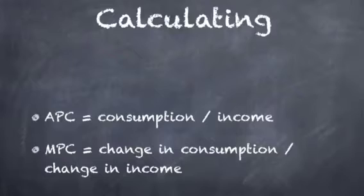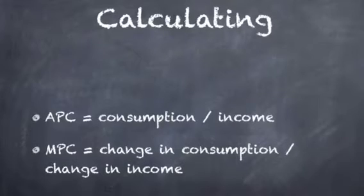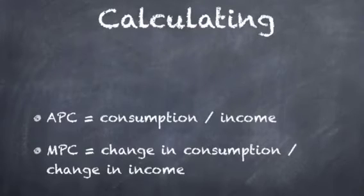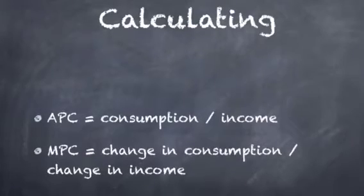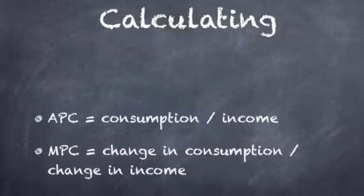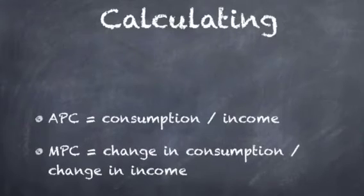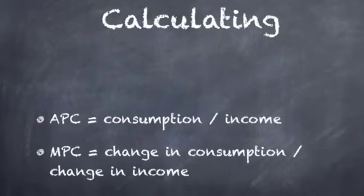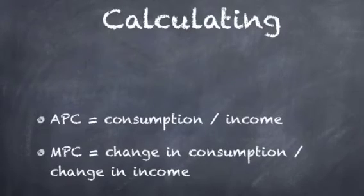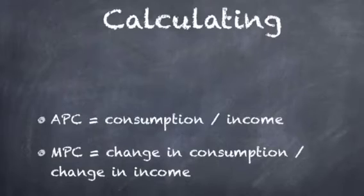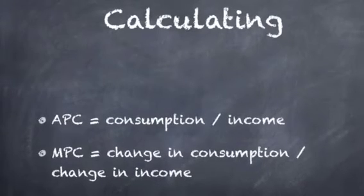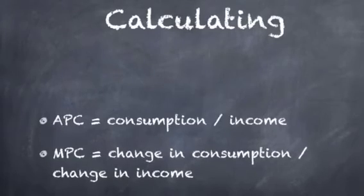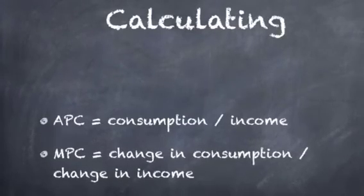If you wanted to calculate these two propensity to consumes, then these formulas are on your screen now. APC is often referred to as average propensity to consume and likewise for MPC. The average propensity to consume is consumption divided by income, and the marginal propensity to consume is the change in consumption divided by the change in income. If you have any questions on how you'd apply this to a certain question, then comment below and I will be able to answer them.